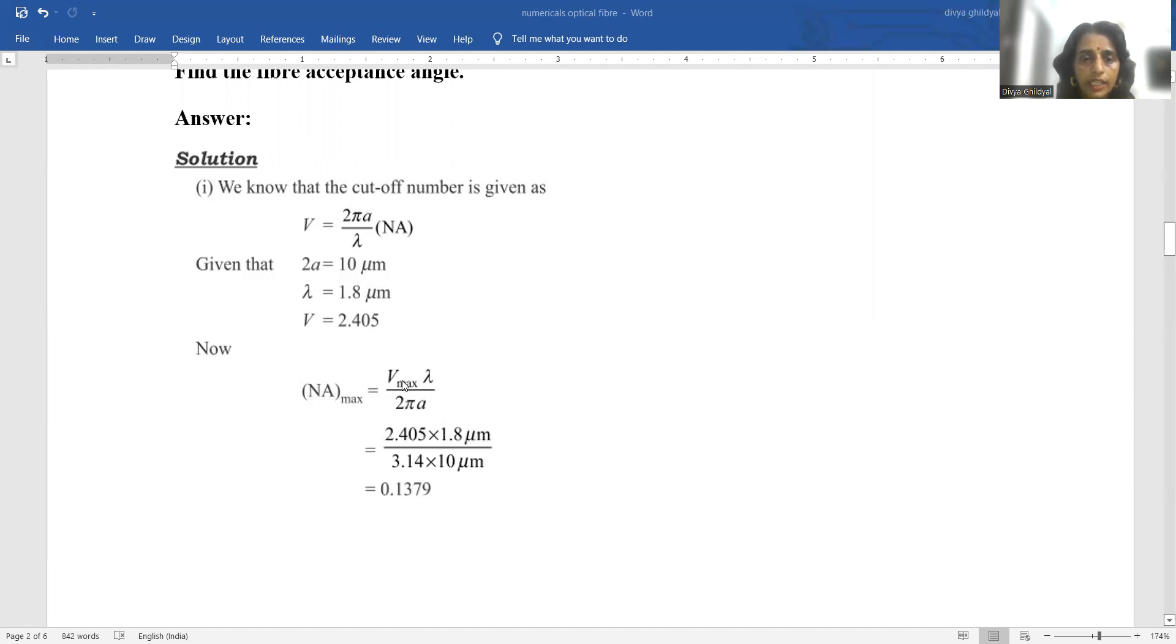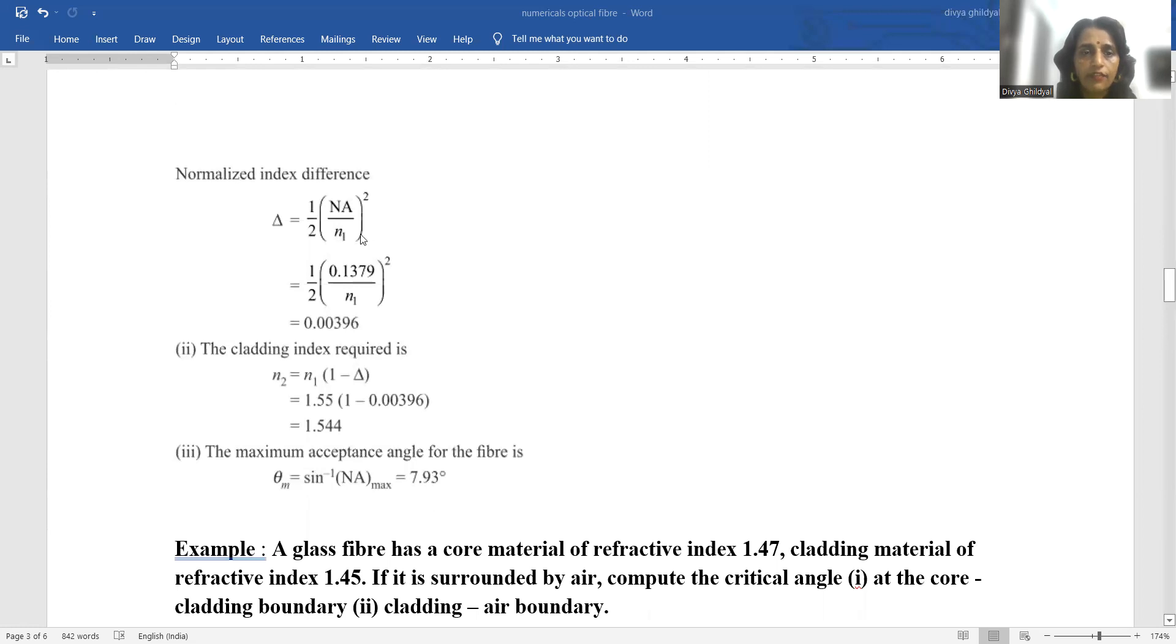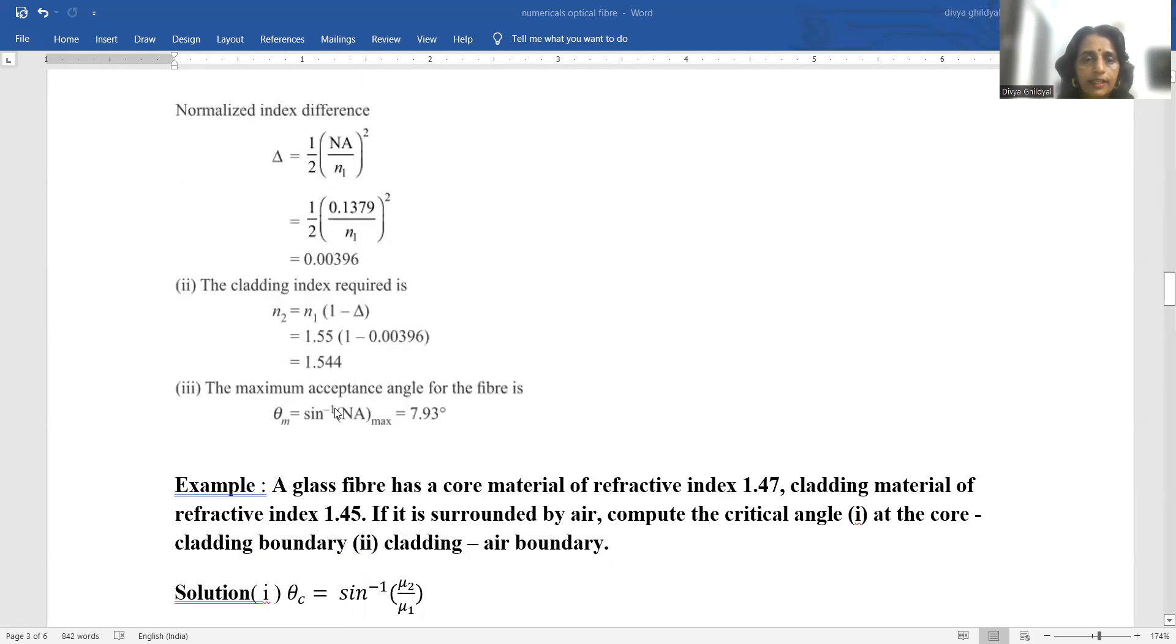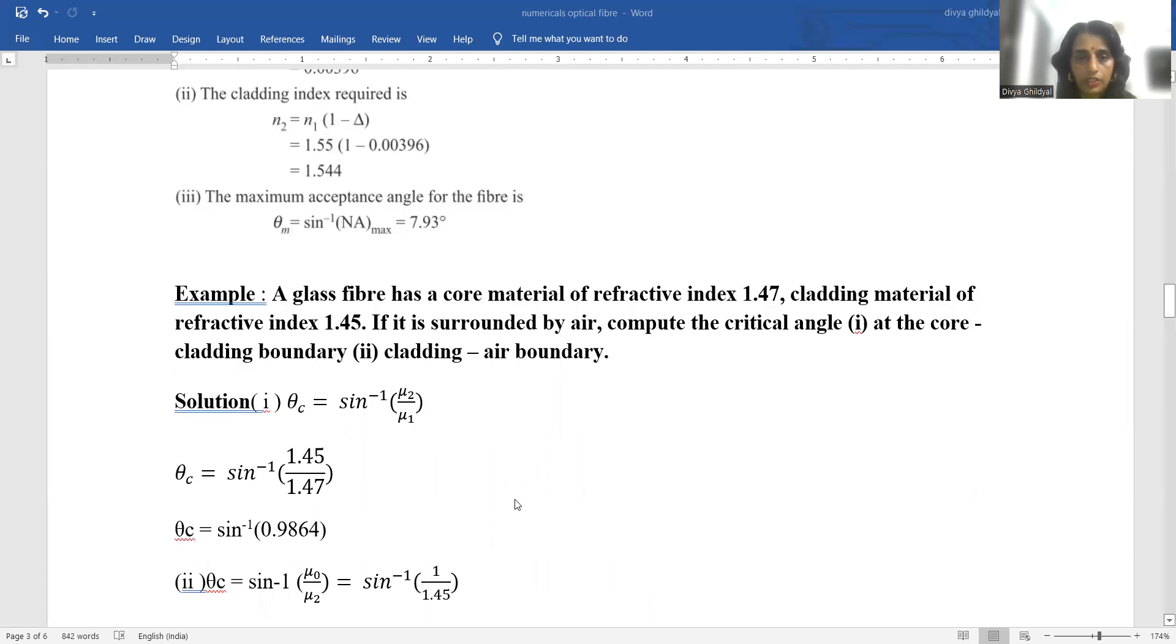Numerical aperture equals v into lambda upon 2 pi a. Keeping the mathematical values we get the answer. Normalized index difference equals half into NA upon n1 whole square. Putting the mathematical value we get the answer. The cladding index required n2 equals n1 into 1 minus del. Maximum acceptance angle of the fiber is sine inverse of numerical aperture.